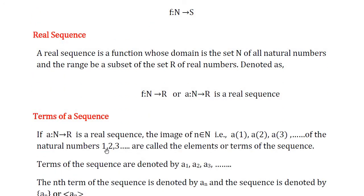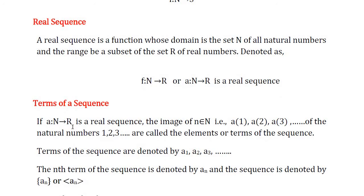Particularly, if this subset S is a subset of real numbers, then the sequence is called a real sequence. A real sequence is a function whose domain is the set N of all natural numbers and the range may be a subset of R of real numbers. It is denoted as F from N to R, or also denoted by a from N to R. This function is generally called a real sequence. Instead of F, we represent it by small a.